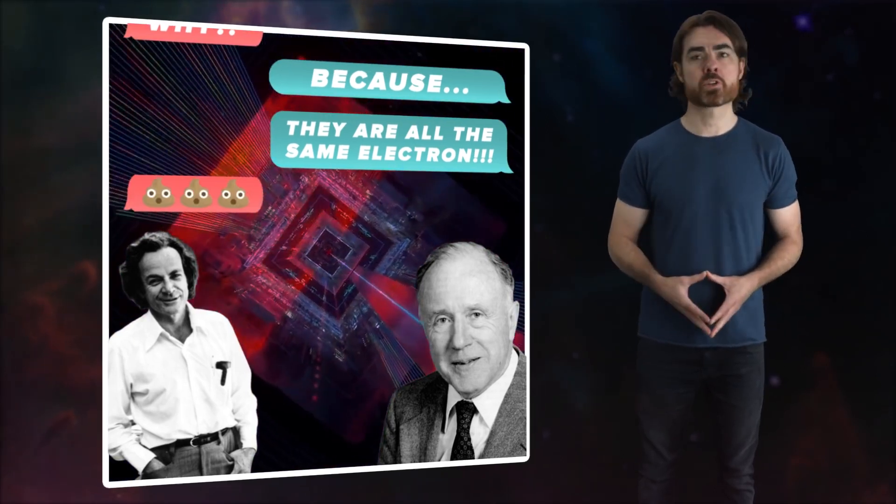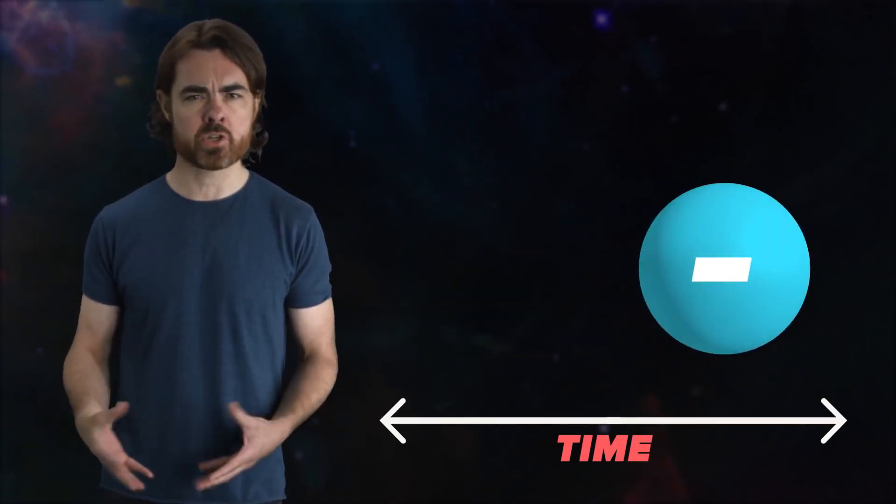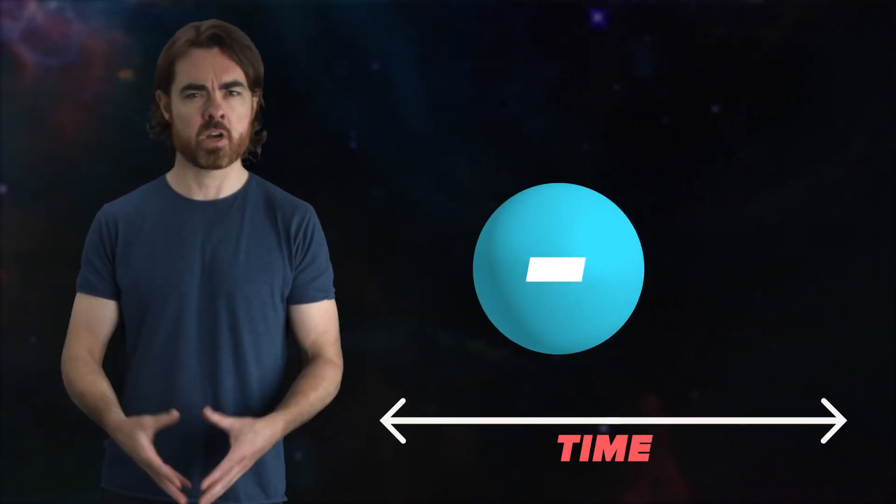Wheeler went on to describe his one electron universe idea, that there exists only one electron, and that electron traverses time in both directions. It bounces in time, eventually traversing the entire past and future history of the universe in both directions, and interacting with itself countless times on each pass. In this way, it fills the universe with the appearance of countless electrons.